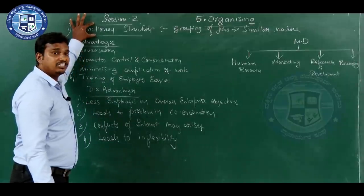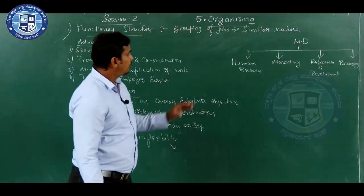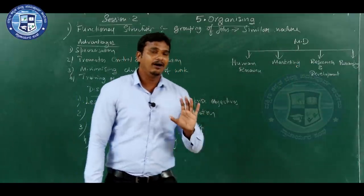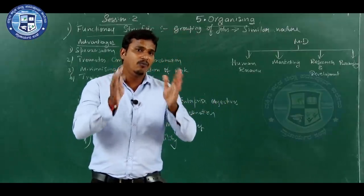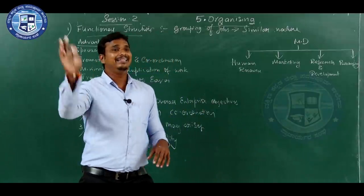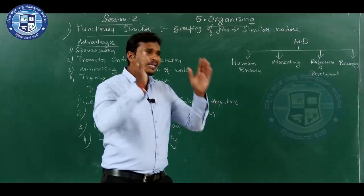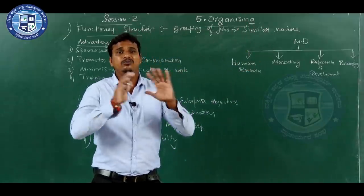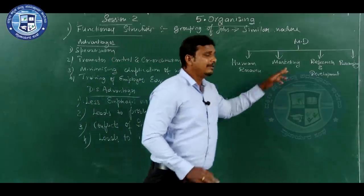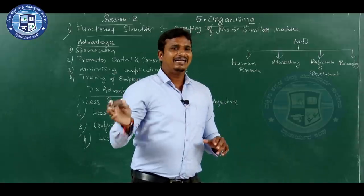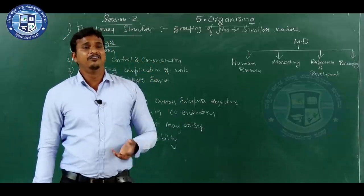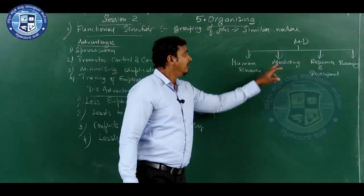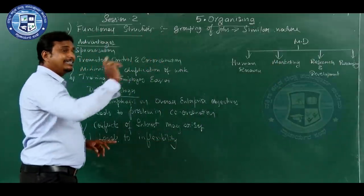The third point: functional structure minimizes the duplication of work because all work is divided into different departments. The human resource department only concentrates on recruiting, selecting, training, and giving salary to employees — they are not thinking about the production function. At the same time, the marketing department thinks only about marketing strategy — how to increase sales and what techniques to develop. Each department concentrates on its particular work and does not think about what other departments are doing, so duplication and overlapping of work is minimized.